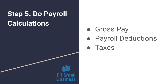Step five: doing payroll calculations. This can be one of the more cumbersome components of doing payroll. First, you'll need gross pay — which is simply the hours worked multiplied by the hourly rate, or the straight salaried amount for that pay period. Make sure you're taking overtime into consideration as part of gross pay. Next are payroll deductions and taxes — what deductions need to come out? Are there benefits, garnishments, or miscellaneous deductions like uniform expenses? And taxes: Social Security, Medicare, federal withholding, and state withholding if applicable — all need to be deducted from gross pay.